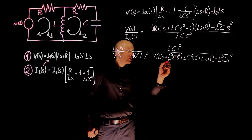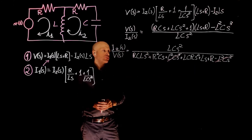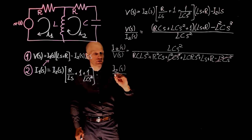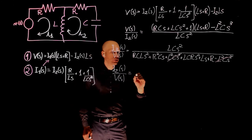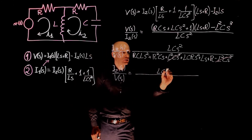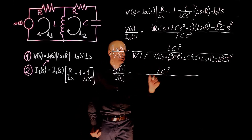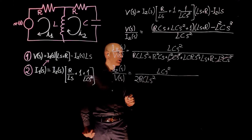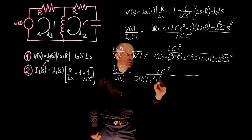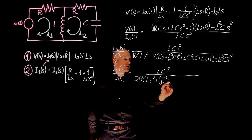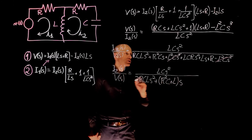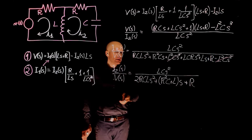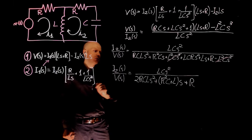We see that the terms to the power of 3 cancel, and we can further simplify. The transfer function is defined as output over input, so the expression needs to be inverted. I2(S)/V(S) equals LCs² divided by the expanded denominator: starting with the power-of-two terms we have 2RLCs², and factoring all terms with S plus R²C plus L, times S plus R. This is now the transfer function between the output I2 and the input V(S).